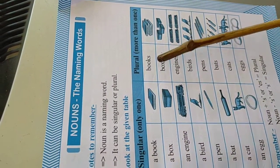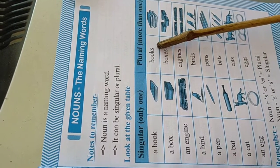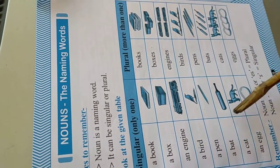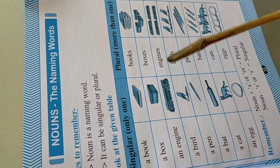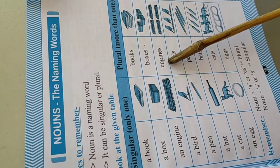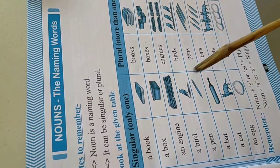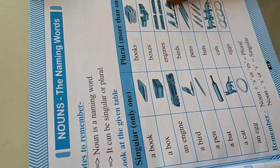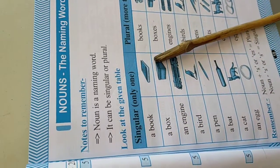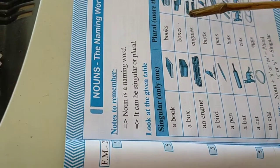A book - the plural will be books. S will be added, or es will be added. Engine - es is added, it is called the plural from the singular. Singular is only one and plural is more than one.